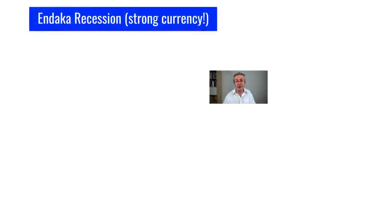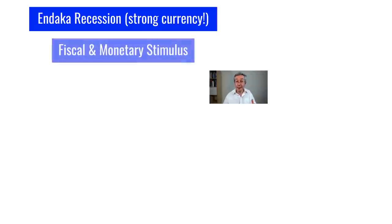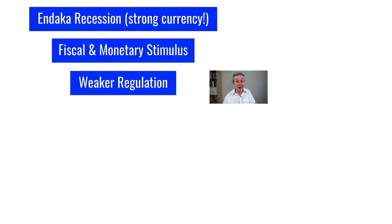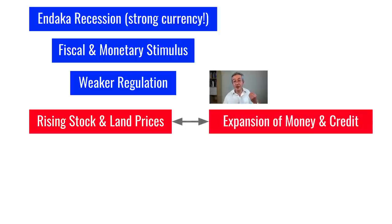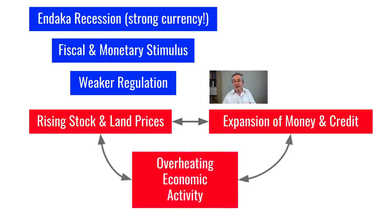Let's summarize what was going on. The central fear of policymakers was something called an Endaka recession — the kind of recession Japan had seen previously when its currency strengthened. Because of the Plaza Accord, the yen did strengthen. But the Japanese government and central bank overreacted: it turned out the impact on the Japanese economy just wasn't that bad, but the size of the stimulus deployed was too big for what was required. Combined with deregulation in the banking and financial system, this created a positive feedback loop — as stock prices and land prices increased, that led to an expansion of the money supply and availability of credit, which fed back to rising equity prices, land prices, and further credit. Ultimately, it was interest rates which popped the bubble.